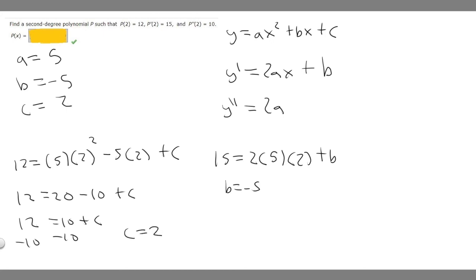Now we've got everything and just need to plug it in. P(x) = ax² - a is 5, so 5x², plus bx - b is -5, so -5x, plus c, which is 2. This gives us P(x) = 5x² - 5x + 2, which is the answer to this question.